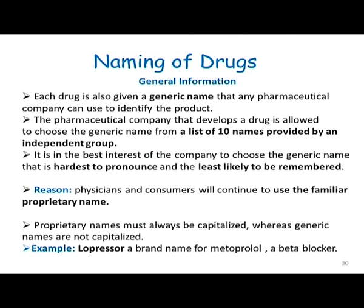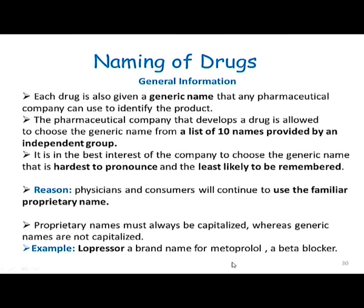So 20 years down the line, when everybody is making that molecule, people would still go to a pharmacist and ask for the brand rather than the generic compound. For example, Lopressor is a brand name for the generic name Metoprolol — it is a beta blocker used for hypertension, it brings down blood pressure. Imagine somebody having high blood pressure — which name would he prefer? Lopressor, which is quite in sync with his high blood pressure, rather than Metoprolol. That's the trick.